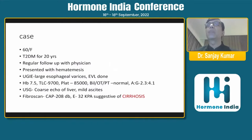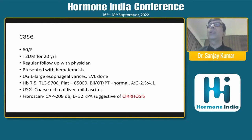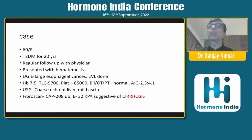The first was a 60-year-old female who came to me. She was a diabetic for 20 years, on regular follow-up with a physician, and she presented with hematemesis. When we evaluated her, she had large esophageal varices on endoscopy and we did endoscopic variceal ligation. Her hemoglobin was 7.5, platelets were low, bilirubin and liver enzymes were normal. The only finding on LFT was a reversal of the AG ratio. Ultrasound showed coarse echotexture of the liver and mild ascites. We did a FibroScan, which showed a high E-score of 32 kPa, suggestive of cirrhosis.